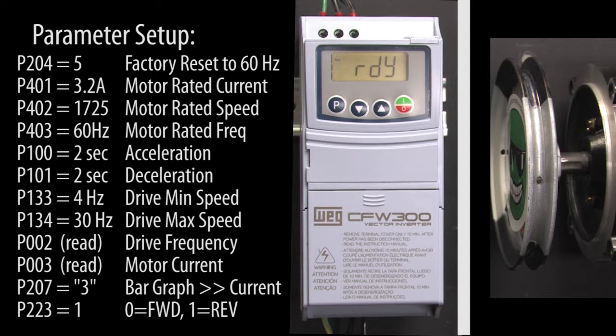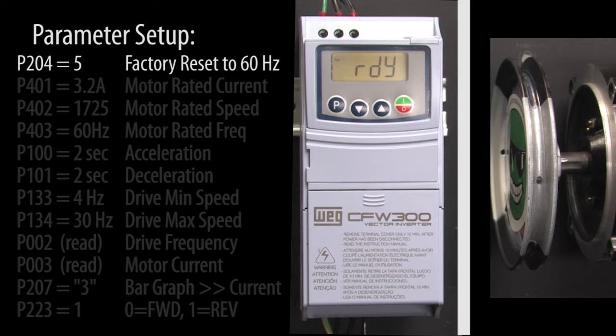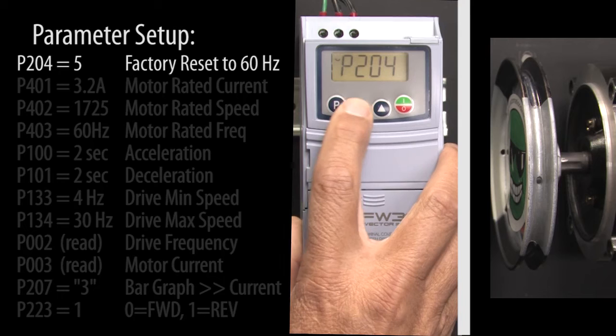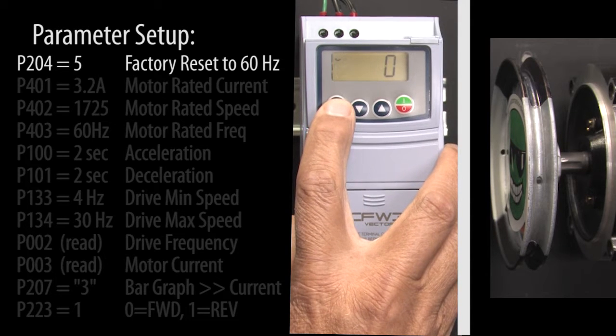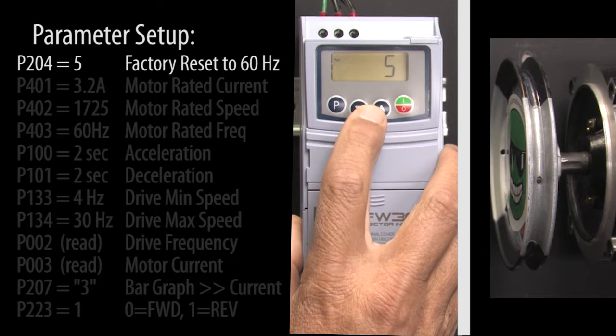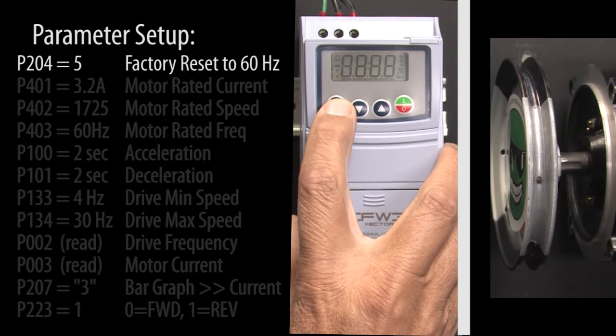Before doing anything, let's reset the drive to factory default so if you're following along we're both starting at the exact same place. Press the P button to get to the parameters and scroll to parameter 204. Hit P again so we can change the parameter to a 5 which resets the drive's parameters to factory default for 60 Hz. Press P to accept that.